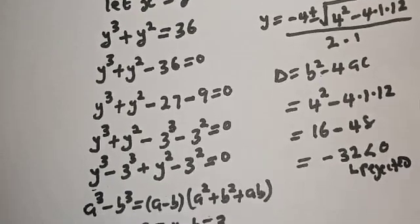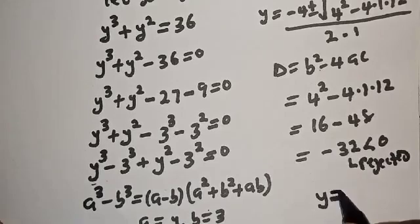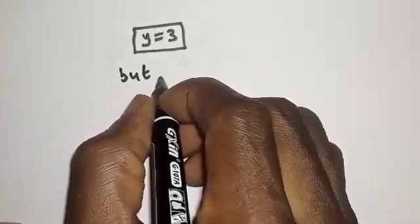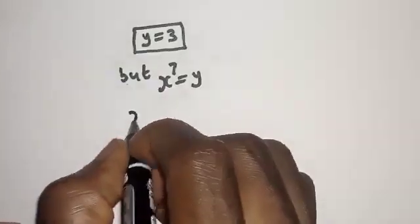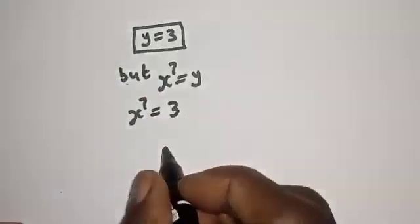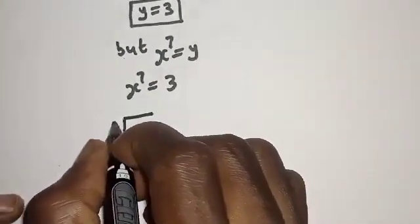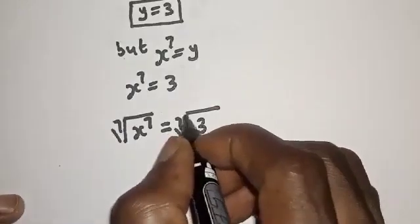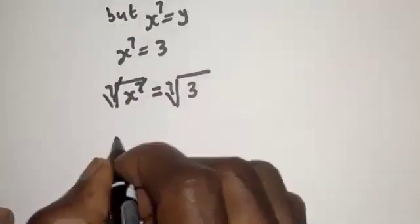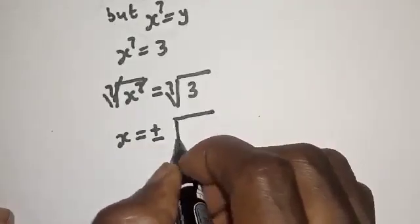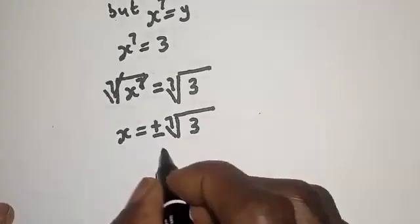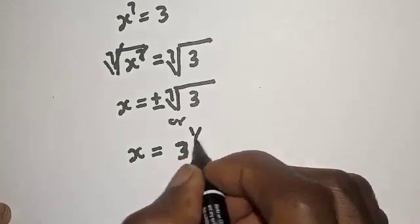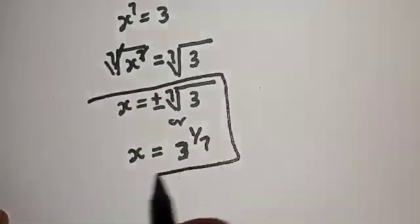The only solution we have is y equals 3. But x raised to power 7 equals y, so x raised to power 7 equals 3. Taking the 7th root of both sides, the 7th root of x raised to power 7 equals the 7th root of 3, so x equals plus or minus the 7th root of 3, which equals 3 raised to power 1 over 7. This is the final answer.